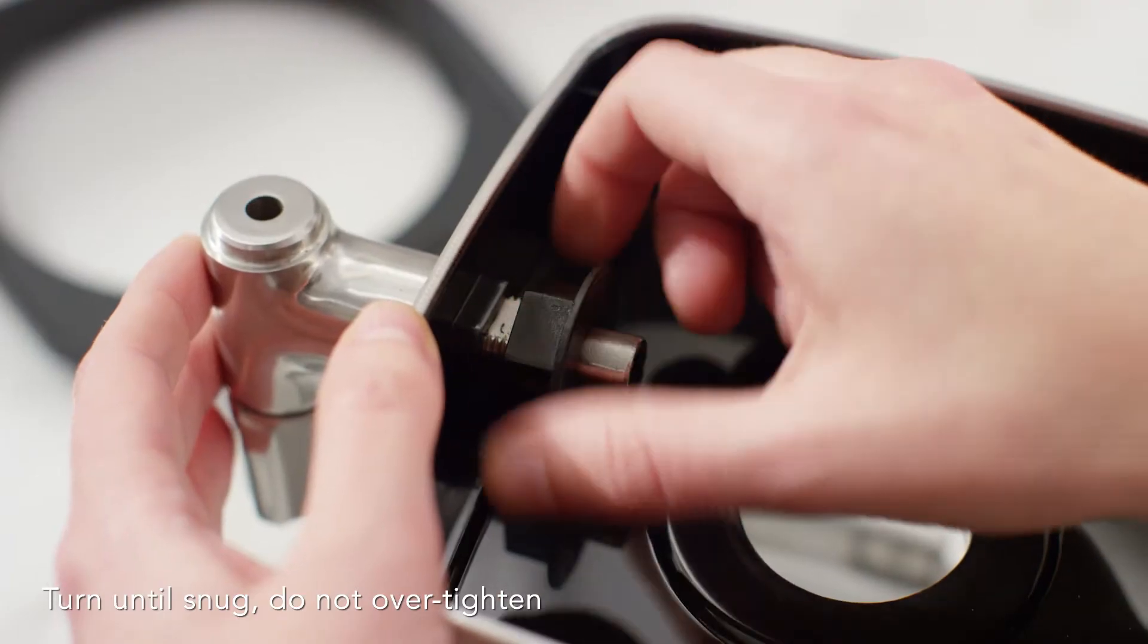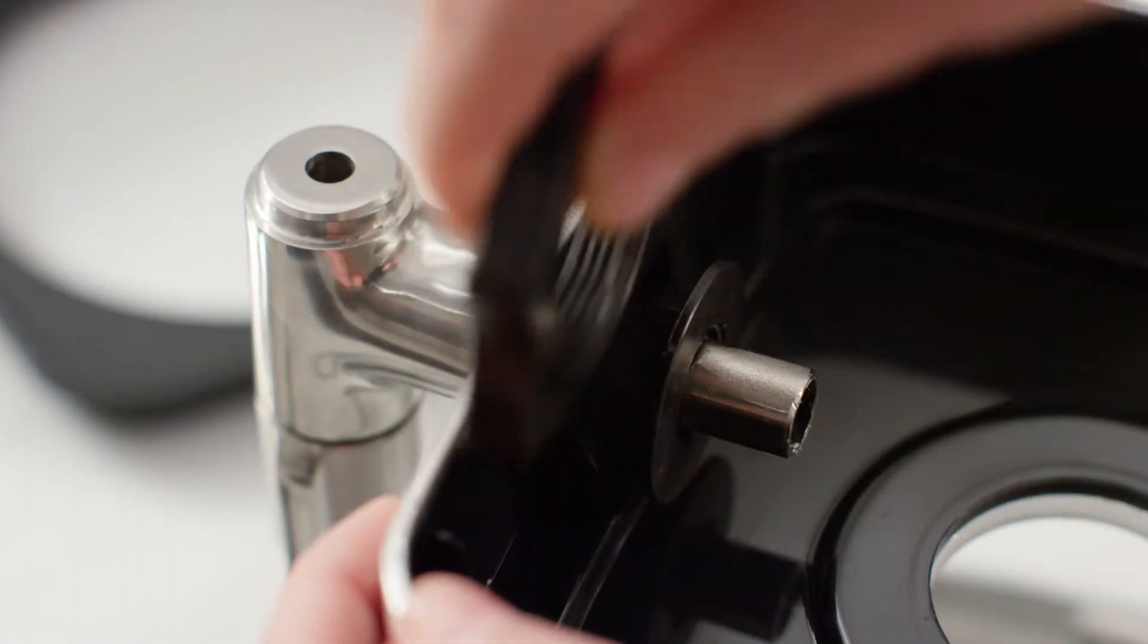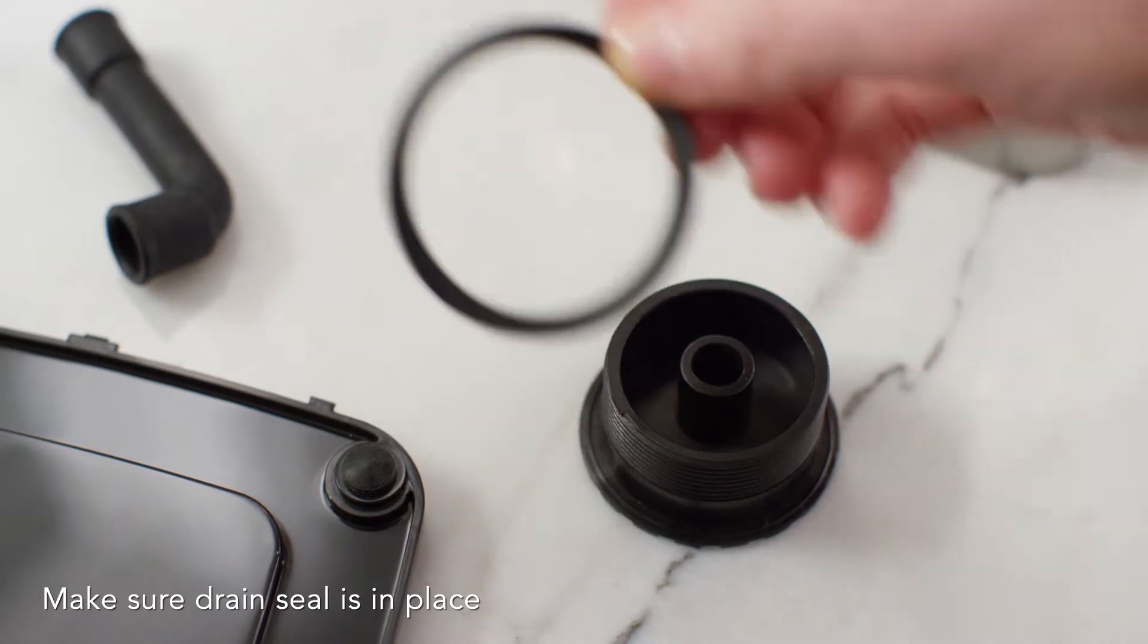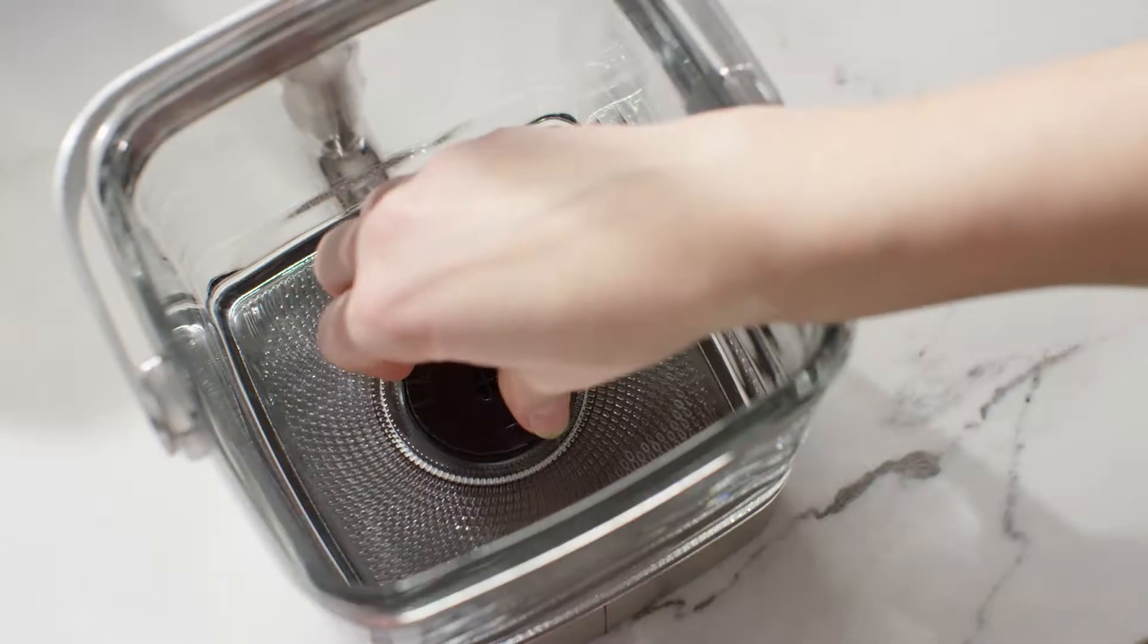Reassemble your cold brew coffee maker by first securing the tap using the wrench tool. Then, replace the coffee drain making sure the seal is in place and reattach the wrench tool to secure the drain.